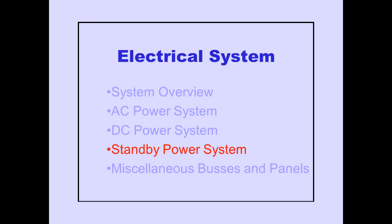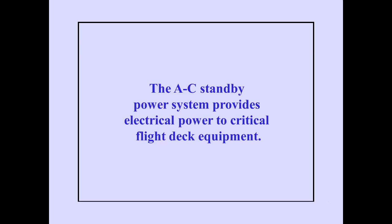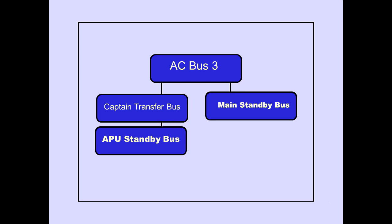Let's continue with a discussion of the standby power system. The AC standby power system provides electrical power to critical flight deck equipment. AC standby power is provided by two buses: the main standby bus and the APU standby bus. We'll discuss the main standby bus first; the APU standby bus will be discussed later in this module.